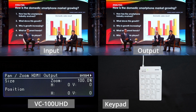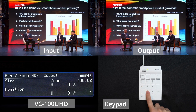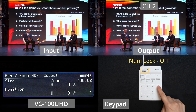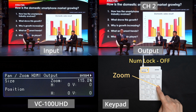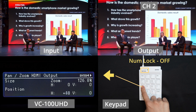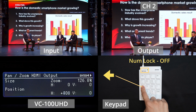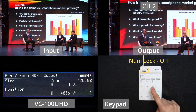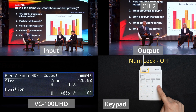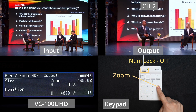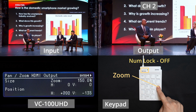Each region of interest represents a channel on a traditional video switcher. In this example, channel 1 is the full-frame image of the connected camera. To set the region of interest for channel 2, use the cursor keys to adjust the position so that only the person on the left is visible. Then press the plus button to zoom up and use the arrow keys to adjust the position.